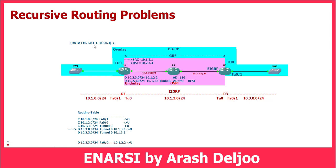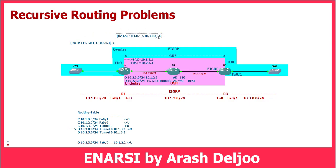When traffic arrives at Router1 with destination IP 10.3.0.3 and is compared against the routing table, it should be forwarded over Tunnel0. Tunnel0 requires GRE encapsulation, so the new outer destination IP becomes 10.2.3.3. Now again, we must perform a recursive lookup for 10.2.3.3 in the routing table. As you can see, 10.2.3.0/24 is reachable over Tunnel0 again. Since Tunnel0 is not a physical outgoing interface, we cannot forward it — and this is the recursive routing problem.